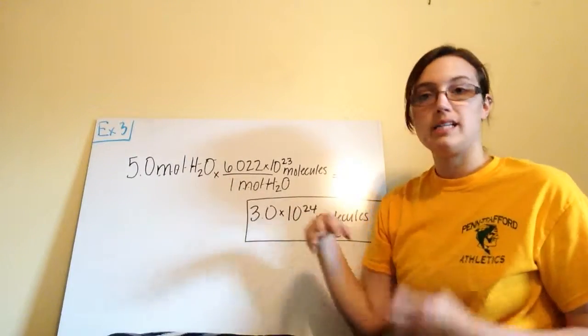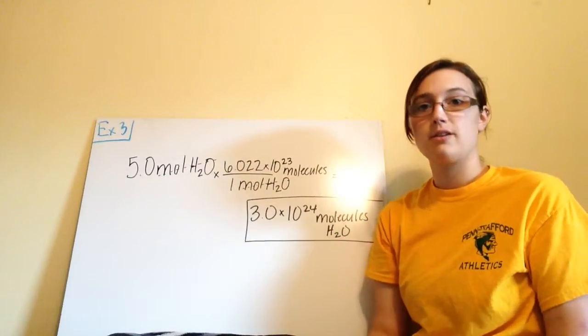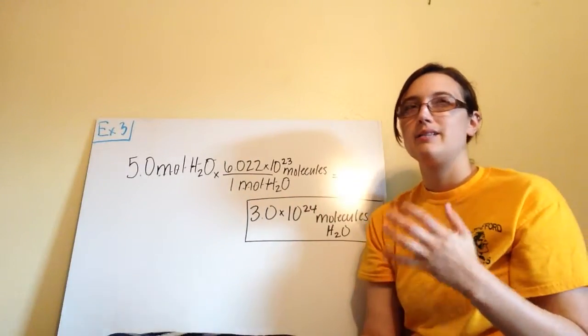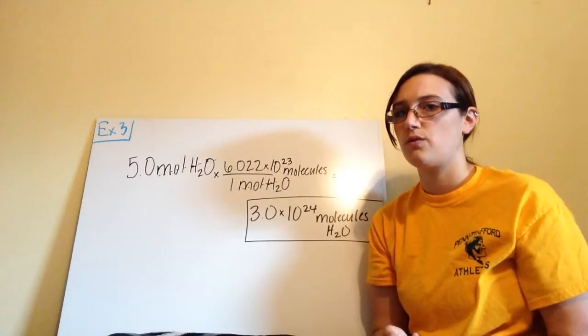But now what I need to do is I need to multiply. 5 times 6.022 times 10 to the 23rd is going to give us 3.011 roughly times 10 to the 24th molecules.